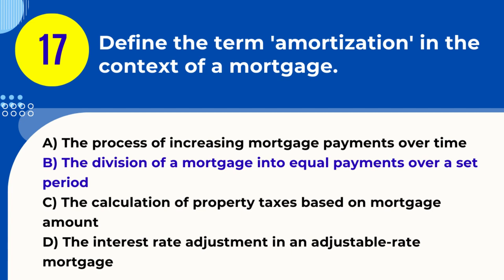Explanation. Amortization in the context of a mortgage refers to the process of dividing the mortgage loan into equal payments spread over a specific period. These payments typically include both principal and interest, gradually reducing the outstanding balance over the loan term.